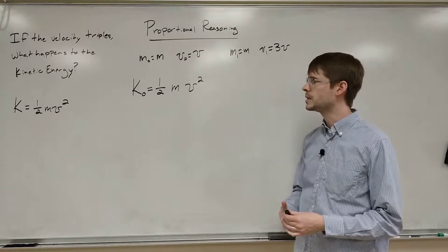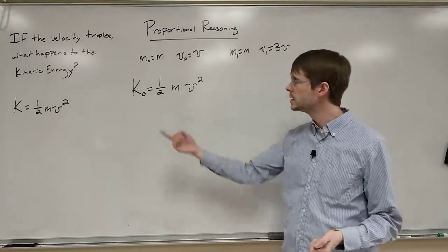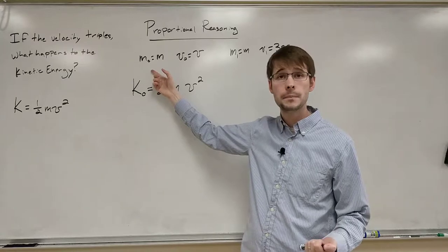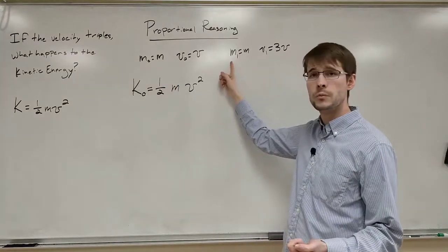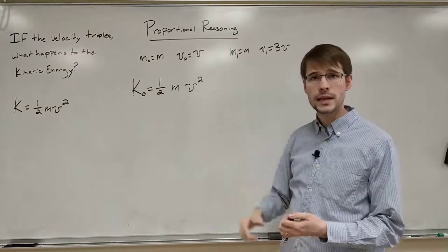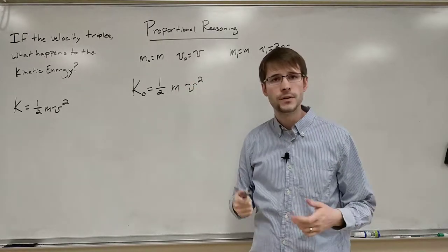Alright. So I've written down some equations here, some things that are kind of like knowns. At the beginning, we're going to just say that it has some mass m. And at the end, m1 is also equal to that same mass m. And we know that at the beginning, it has some velocity. We'll call it v.